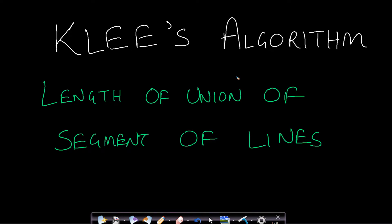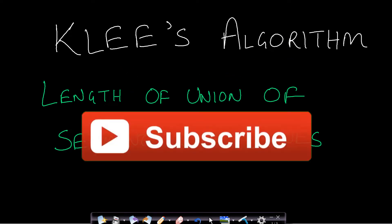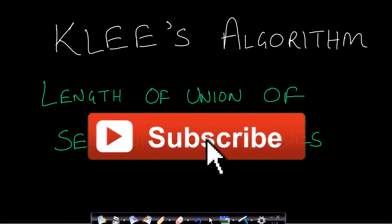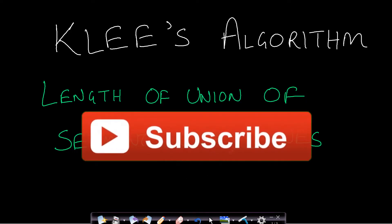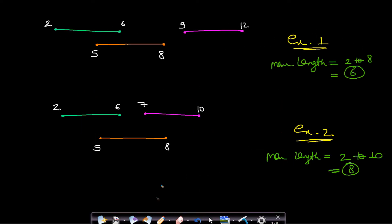Hello guys, welcome back to TechDos. In this video we will see the Cleese algorithm which is used to find the length of the union of segments of a line. In this first example you can see that I have drawn three line segments: one from 2 to 6, another from 5 to 8, and the last one from 9 to 12.